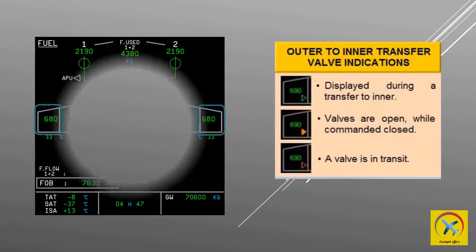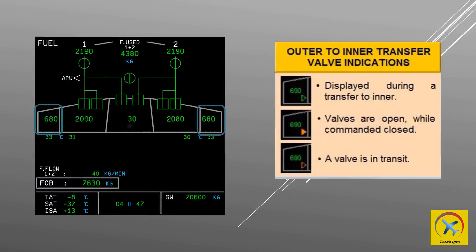The outer-to-inner transfer valve displays green during a transfer of fuel to the inner tank. An amber filled triangle indicates the valves are open while commanded closed, showing a disagreement. An amber unfilled triangle shows the valve is in transit.